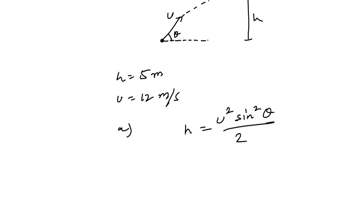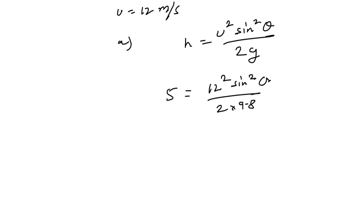So this is 12 squared sine squared theta divided by 2 times 9.8, and this height h is 5. So let's see how much we have got for theta here. This is around 55.6 degrees, the angle of throw.